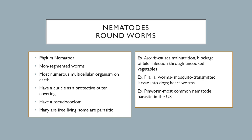Nematodes — phylum Nematoda — are round and non-segmented, unlike annelids. They are the most numerous multicellular organism on Earth. They have an outer cuticle as a protective covering, which hints at the many parasitic species among them, and a pseudocoelom — not completely lined with mesodermal cells. Examples include Ascaris, which infects through uncooked vegetables and can block bile ducts; filarial worms, which cause heartworm in dogs; and pinworms, the most common nematode in the U.S.